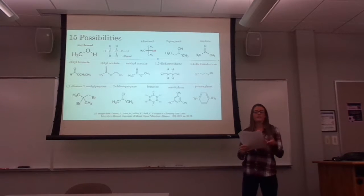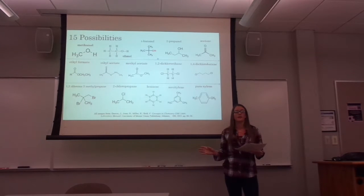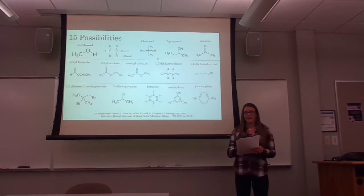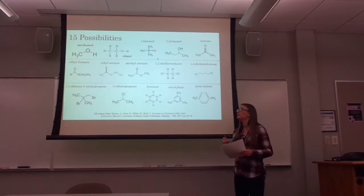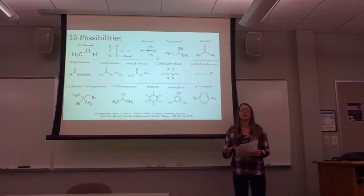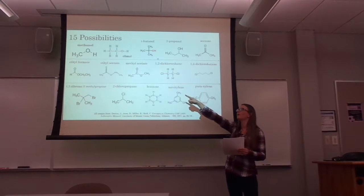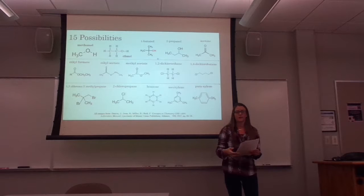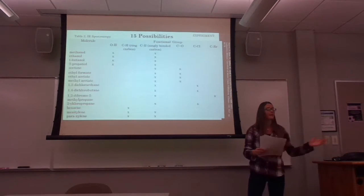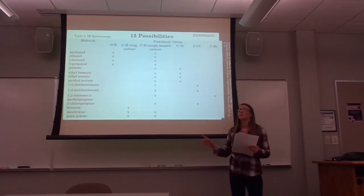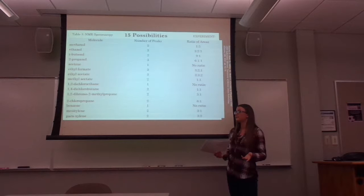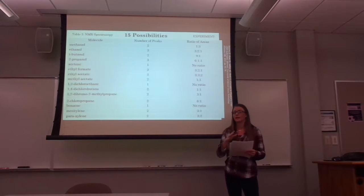In this experiment, there are 15 possibilities for the compound's structure. We use these compound structures to build a chart for both IR and NMR, looking at functional groups and hydrogens present. For example, methanol has an OH functional group and a CH functional group with H bonded on a single carbon. We fill out the chart for all 15 possibilities, marking an X for each functional group present.